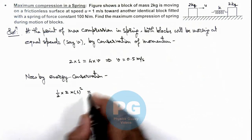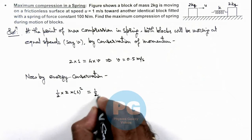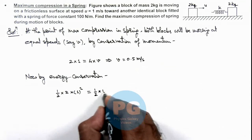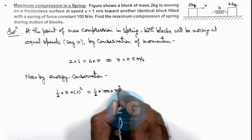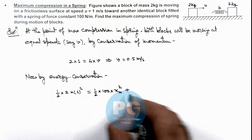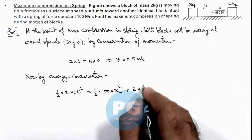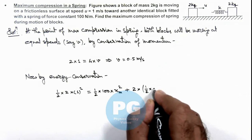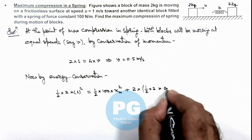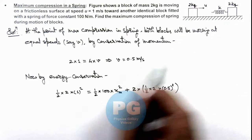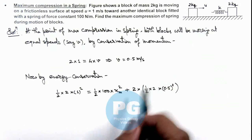So it can be written as ½ multiplied by k of spring is 100 multiplied by x_max², plus the kinetic energy of blocks would be 2 multiplied by ½ multiplied by 2 multiplied by 0.5², which is the speed at the time of maximum compression in the spring.